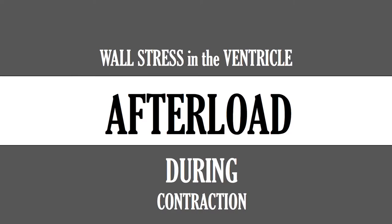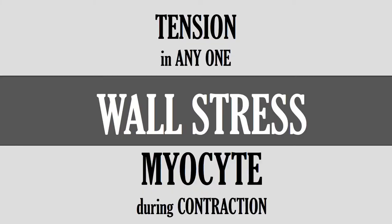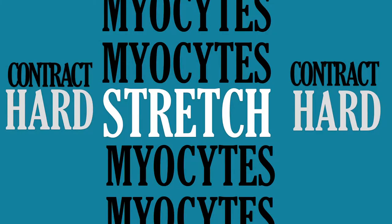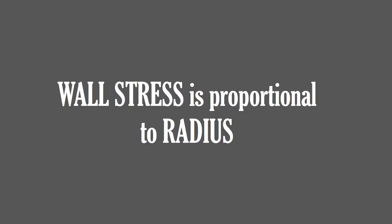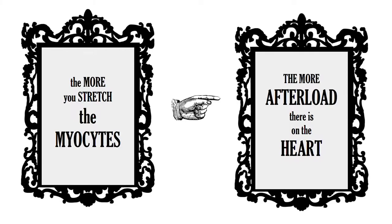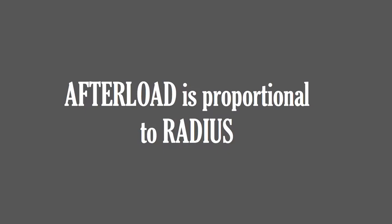We're good with the idea of wall stress, wall tension, and afterload. This is a pivotal concept. If wall stress is the tension generated in the muscle cells during contraction, and we already know that tension generated depends on how much we stretch the muscle before contraction — going back to our preload discussion — this just means wall stress is proportional to radius. The more you stretch them, the more afterload there is on the heart. So the first part of this relationship is: afterload is proportional to radius.